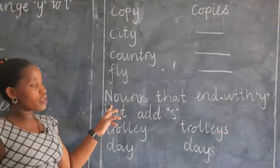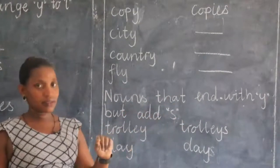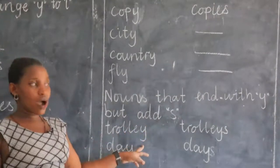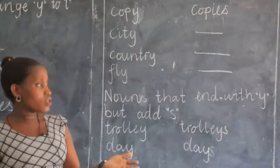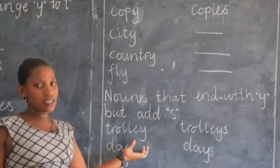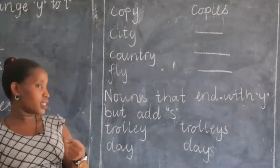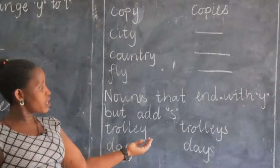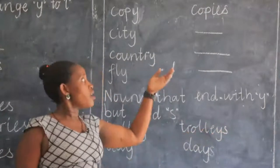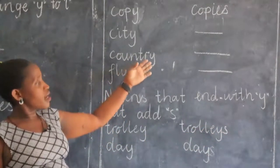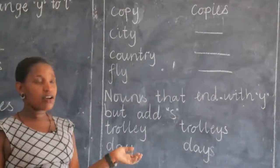Now, when we come to nouns that end with Y but just add S — these ones end with Y, but when we are changing them to their plural, we just add S. What shows us that here we just add S? It is Y coming after a vowel letter. We have five vowel letters. So Y coming after a vowel letter, we just add S in the plural form. We don't drop Y. Here when Y comes after a vowel, we just add S.